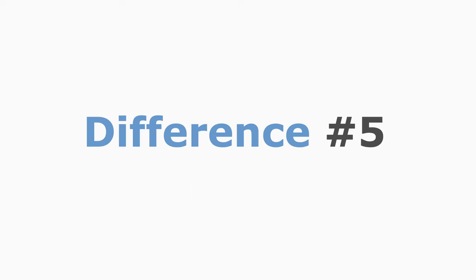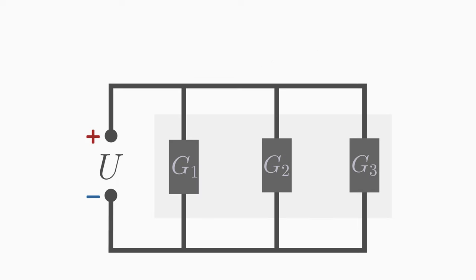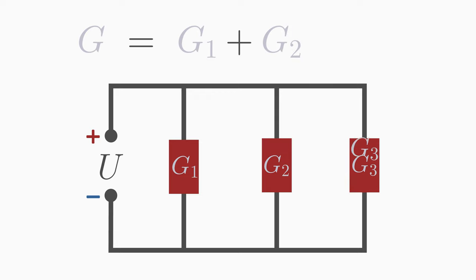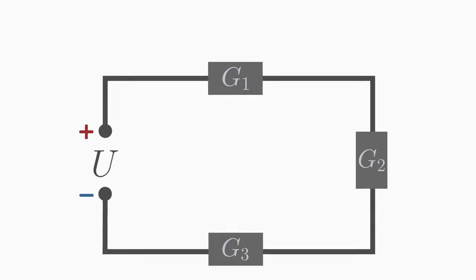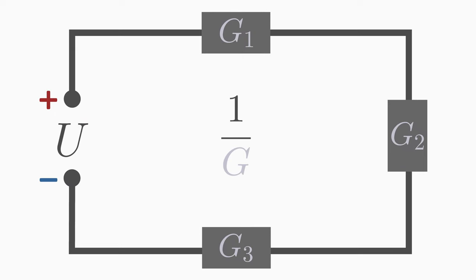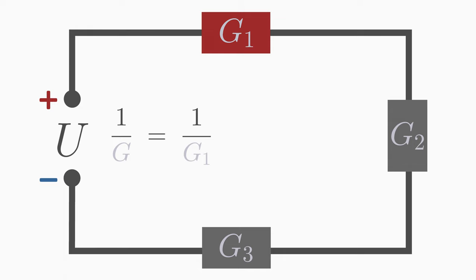Difference number five: for the conductance values of the resistors, it is the other way around. The total conductance G of a parallel circuit is the sum of the individual conductances G1, G2, and G3. And in a series circuit, the reciprocal conductance 1 over G is equal to 1 over G1 plus 1 over G2 plus 1 over G3.